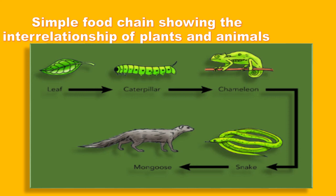The caterpillar will be consumed by the chameleon. The chameleon is known as a carnivore — specifically the kind of carnivore that only consumes animals that eat plants. Then we have the snake. The snake will consume the chameleon. The snake is also a carnivore, but it is the kind that only eats fleshy meat. Then we have the mongoose, and the mongoose will eat the snake — the mongoose is also a carnivore. So the food chain basically shows the interrelationship between plants and animals — who eats what.